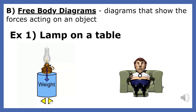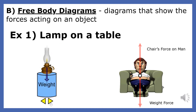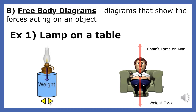Look at the man sitting in the chair. The free body diagram for the man includes a downward weight force and the upward force of the chair. The man is at a state of static equilibrium; therefore, the upward force of the chair on the man is equal to the downward weight force.